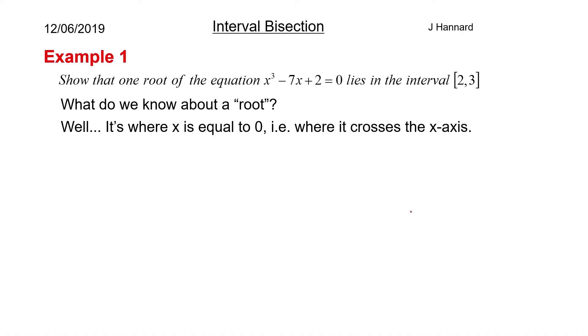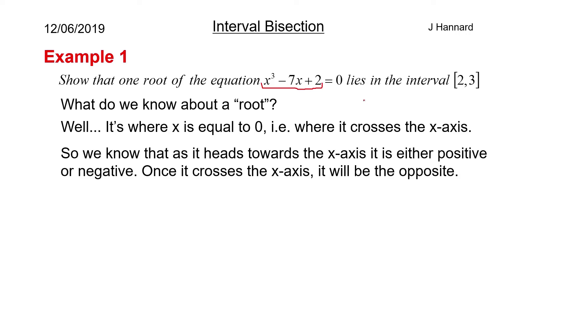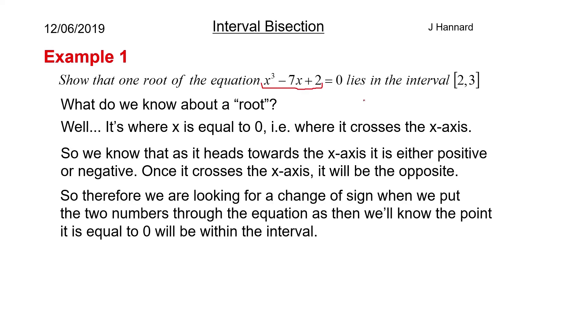Well a root is where x is equal to 0, i.e. where it crosses the x-axis. So when you factorize a quadratic and you say maybe x plus 2, x plus 1, you say x equals minus 1 and x equals minus 2 are the roots. That's what make that equation 0. So we want this equation to be equal to 0. That is we want the value of x where that whole equation is equal to 0. So we know that as it heads towards the x-axis it's either positive or negative. Once it crosses the x-axis it will be the opposite. So therefore we are looking for a change of sign when we put the two numbers through the equation.